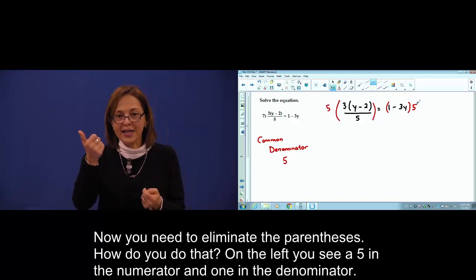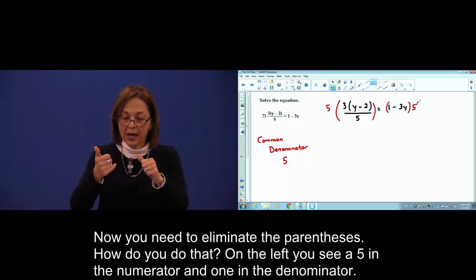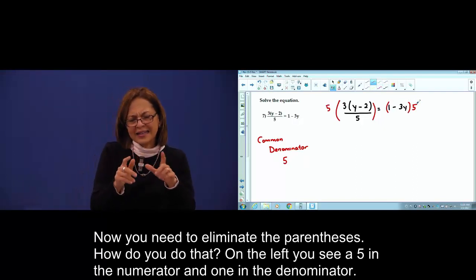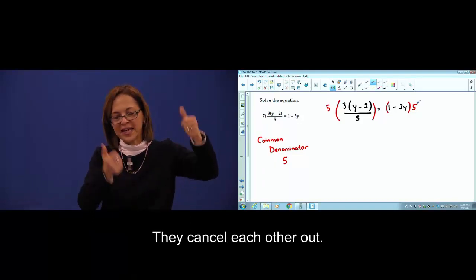Now, you need to eliminate the parentheses. How do you do that? On the left, can you see a 5 in the numerator and one in the denominator? Cancel.